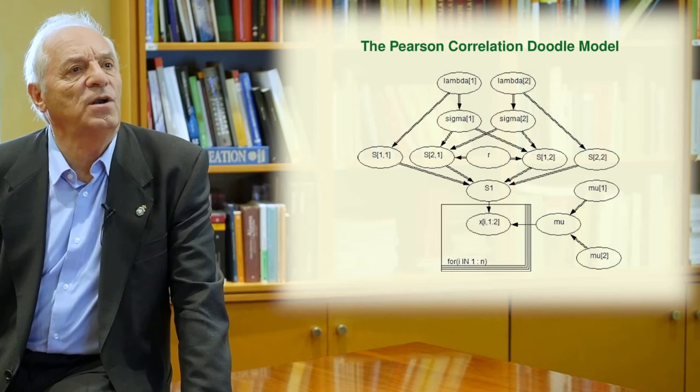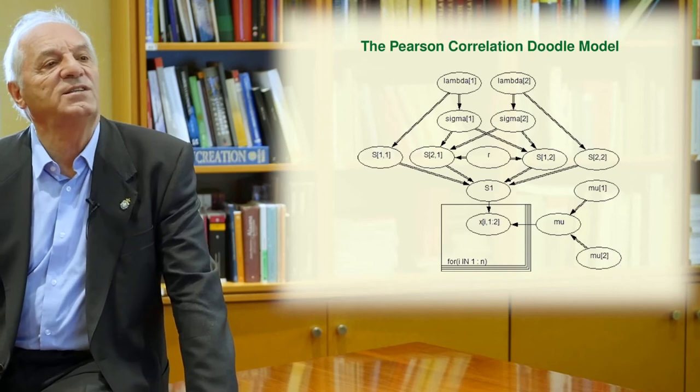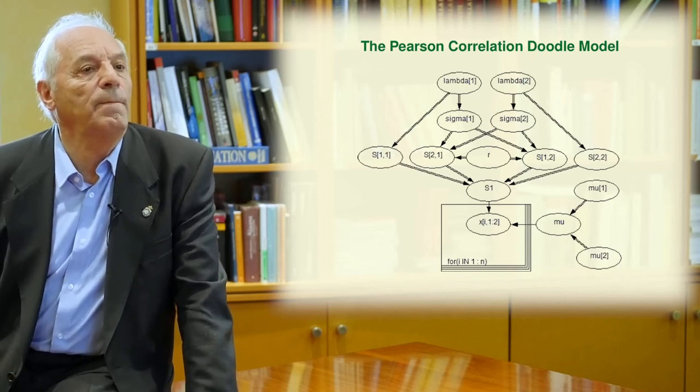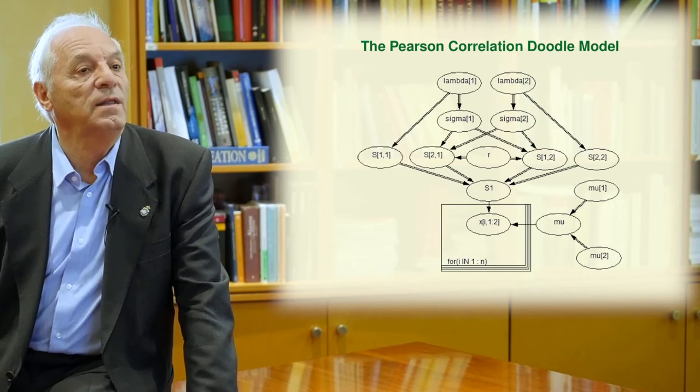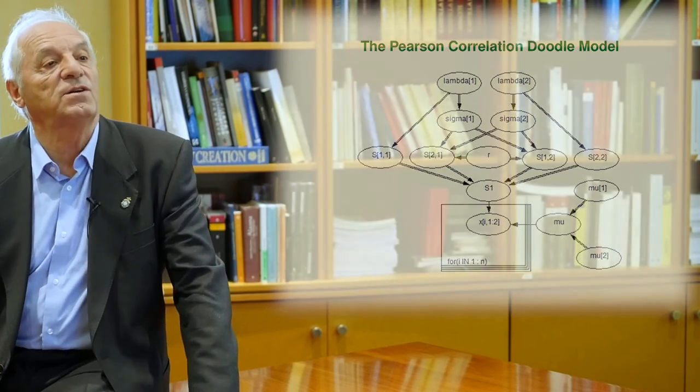This is the Pearson correlation DOODLE model, and you can see the Bayesian network that defines this model, which is more illustrative than the list of commands.